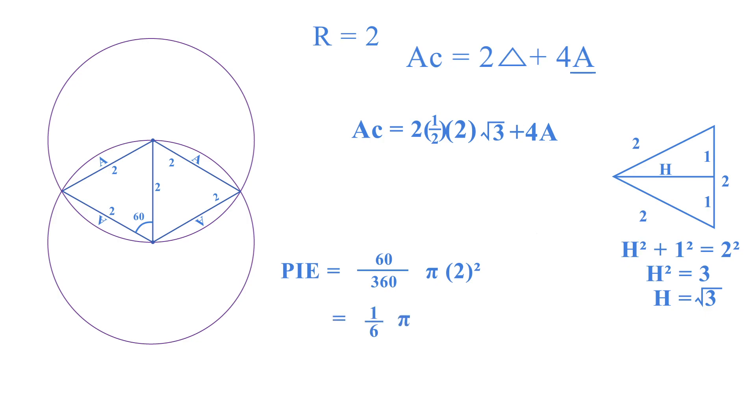So first let's just figure out the area of the pie. So this would be 1 over 6, π times 4, so this becomes 4π/6. And then to get A, I would take my pie which is this whole region, and I would subtract from it this equilateral triangle. And if I do that, I will get the area for A.